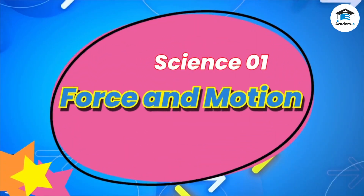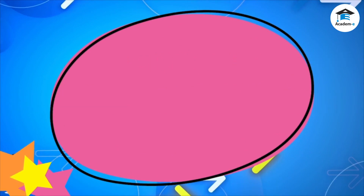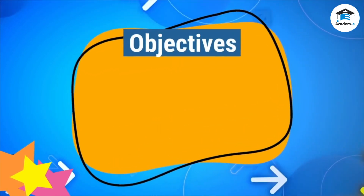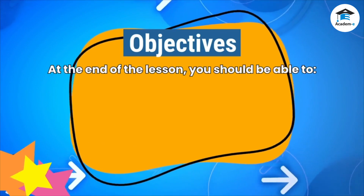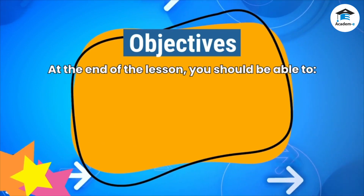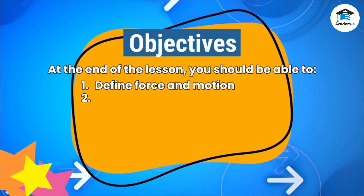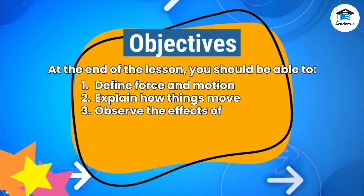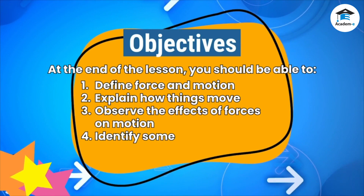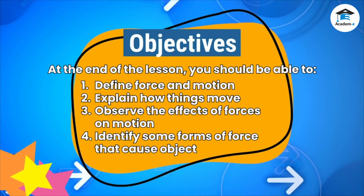Science 1: Force and Motion. Objectives. At the end of the lesson, you should be able to define force and motion, explain how things move, observe the effects of forces on motion, and identify some forms of force that cause objects to move.